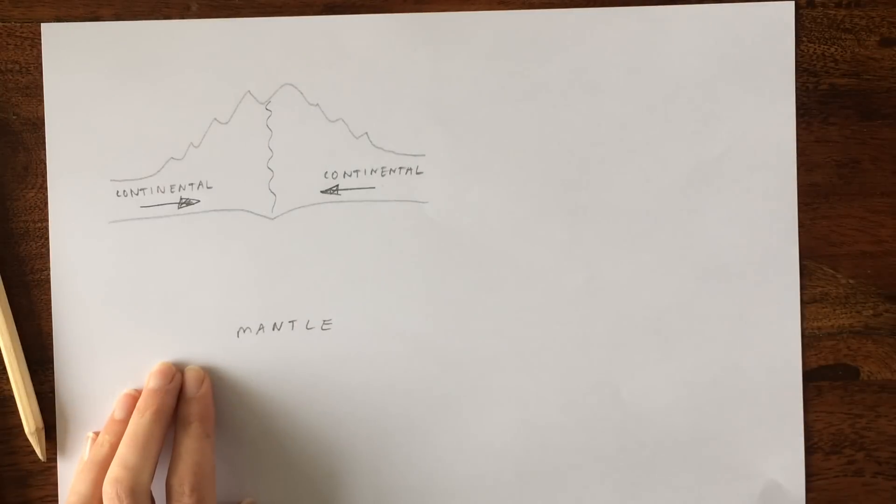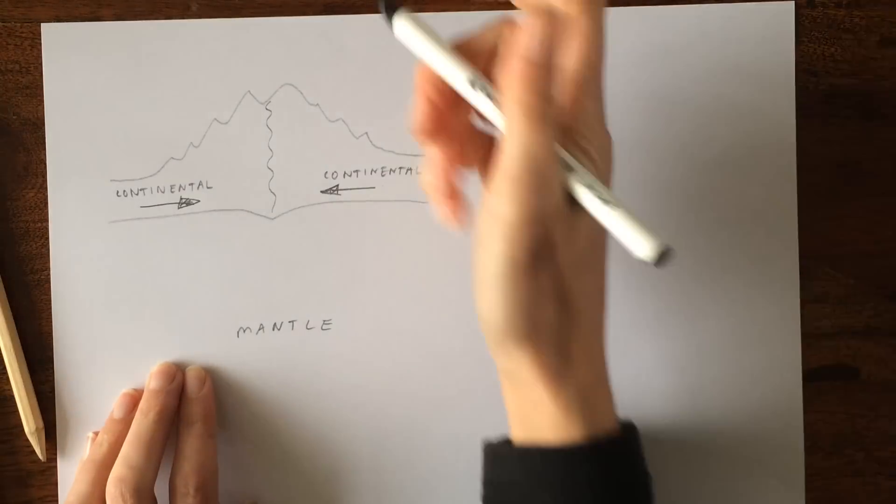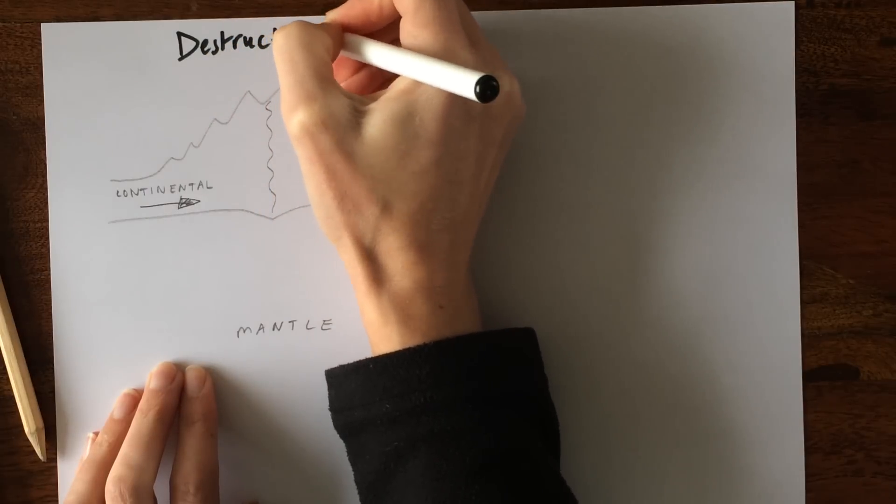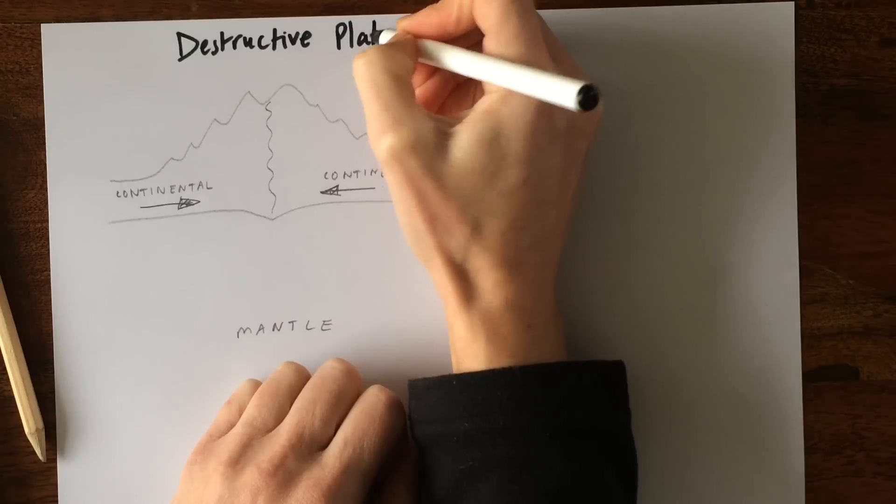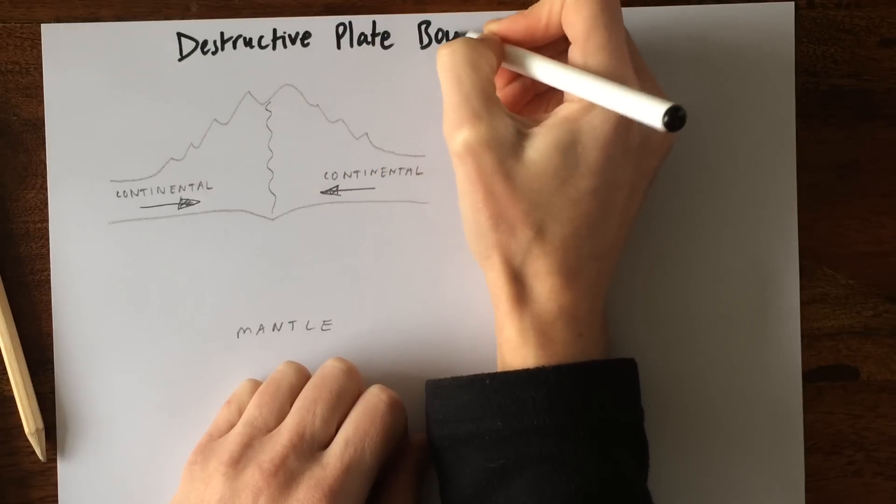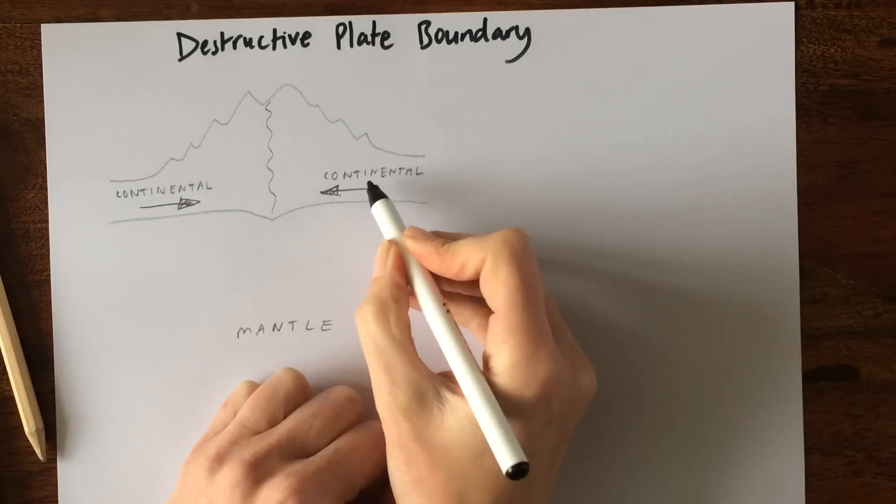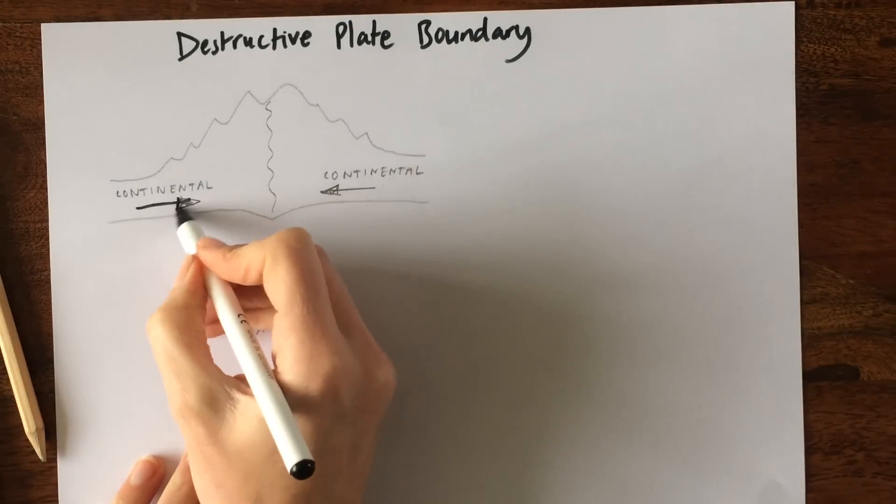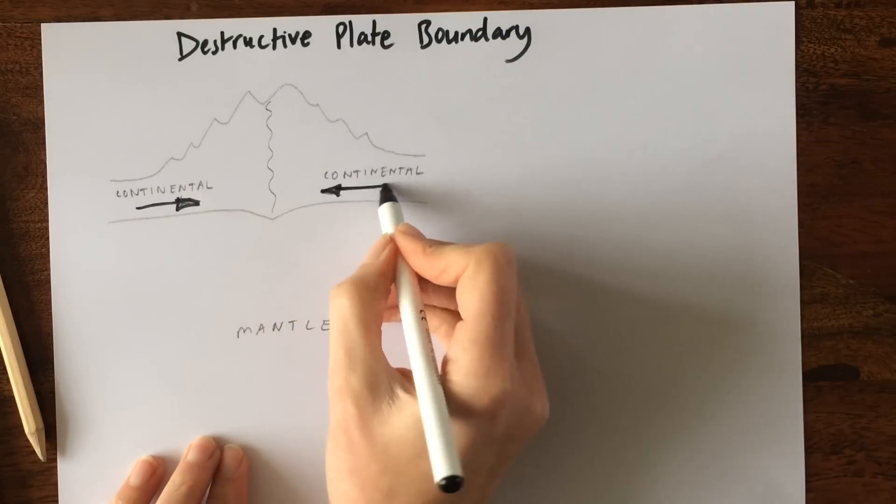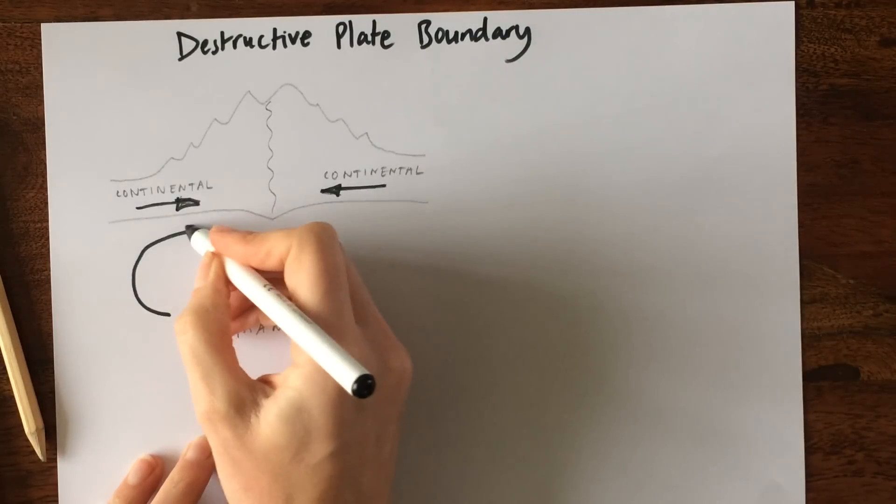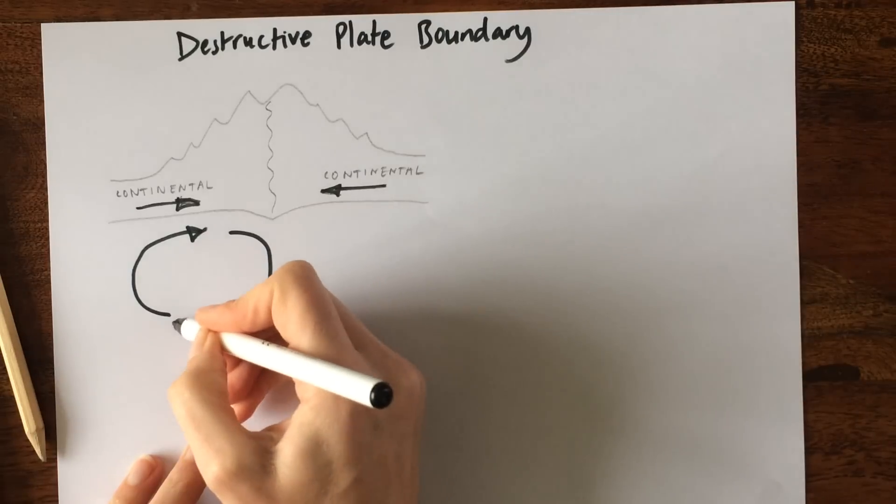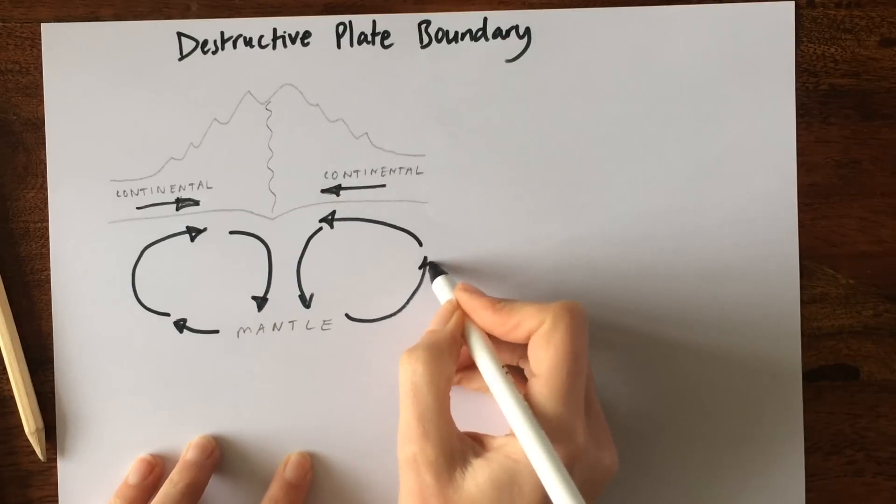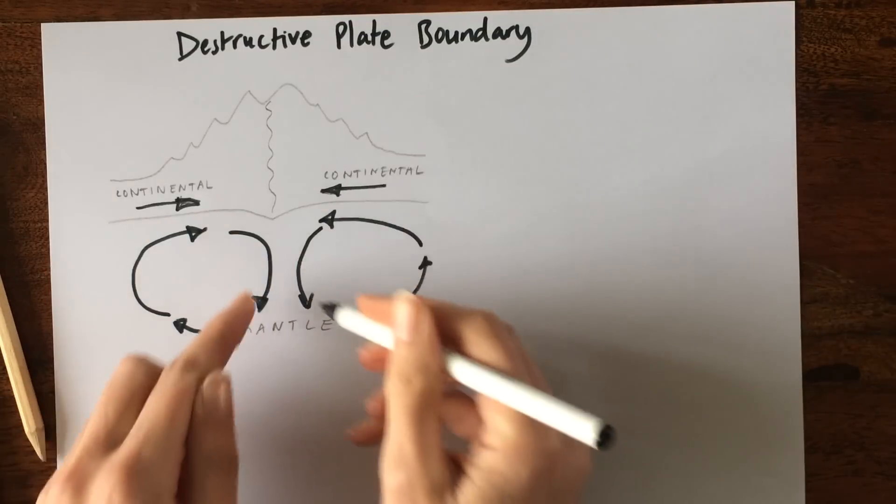So this is a destructive plate boundary. Now I suggest that you get a piece of paper and you draw this diagram with me at the same time. So this is a destructive plate boundary, and as I said previously we have a piece of continental crust moving towards a piece of continental crust. So they are moving towards each other, and that's because in the mantle the convection currents are moving towards each other just like that. That's what's happening here in our mantle.